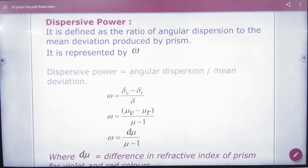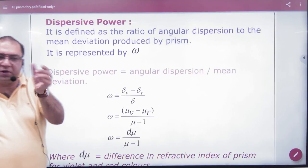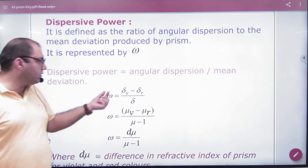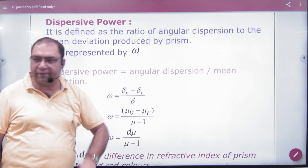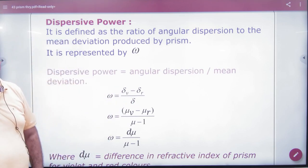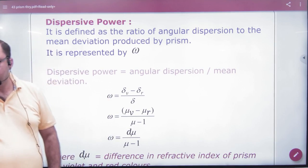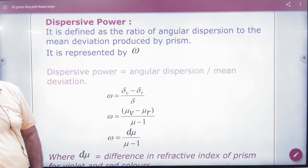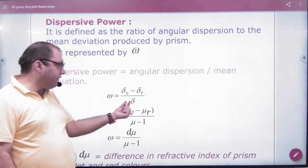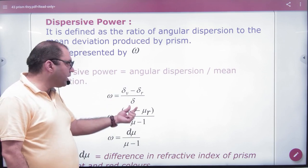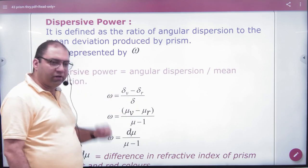Dispersive power is if you take angular dispersion, or maximum and minimum angle difference, and divide it from all colors mean deviation. Delta means all colors mean deviation, sometimes we say yellow color. So divide it from mean deviation, then the ratio we say is dispersive power omega.